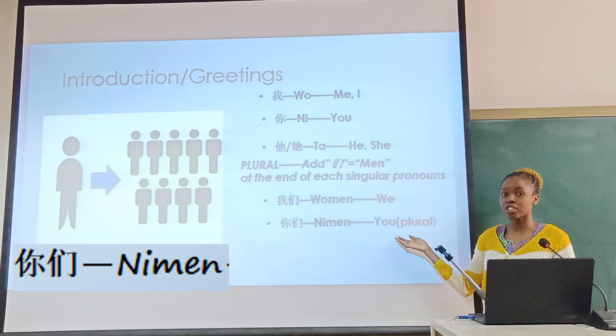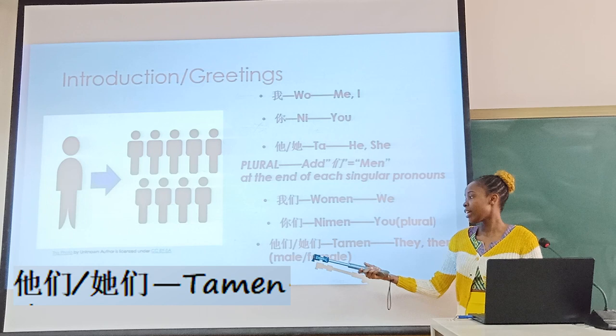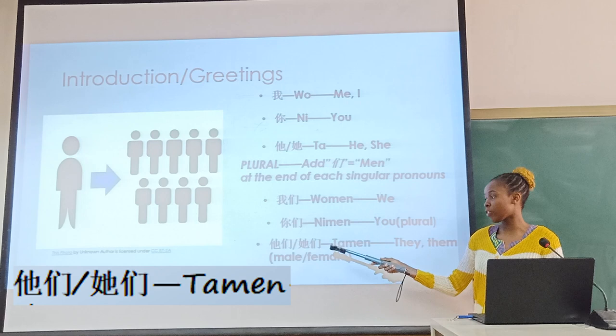The second plural form is Nǐmen, which is the plural 'you'. And the last one is Tāmen. The first Chinese character of Tāmen represents 'they' for the male version, and the second character of Tāmen represents 'they' for the female version.